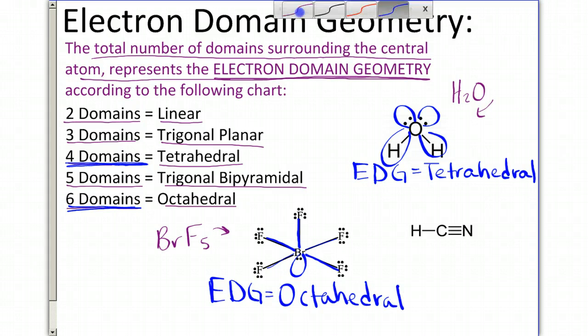Lastly, we'll do hydrocyanic acid, or HCN, which is this one over here. If you recall, this one has two domains, one and two. Two domains is known as linear. And so this one has an electron domain geometry called linear.